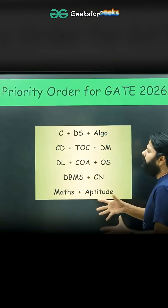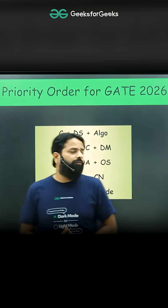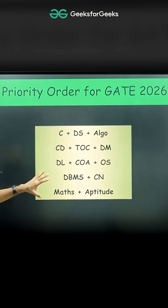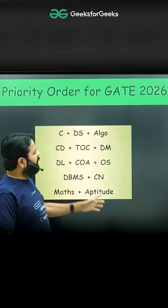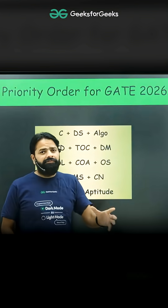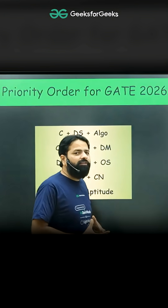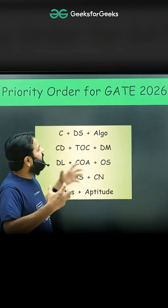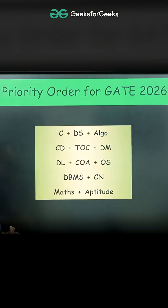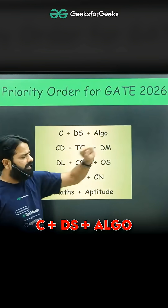Let's come to the point — what should be the priority order for your preparation? There are good chances of getting good marks when you choose a group of subjects, do revision, and practice with them, because there is a connection between them. That way you will get much more confidence. For example, CDS and Algo —